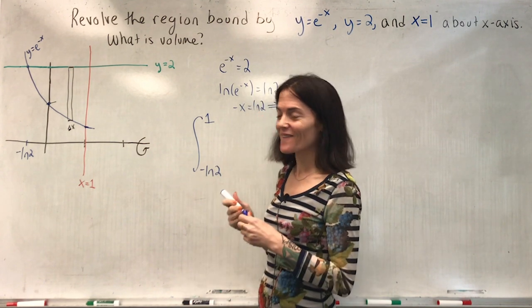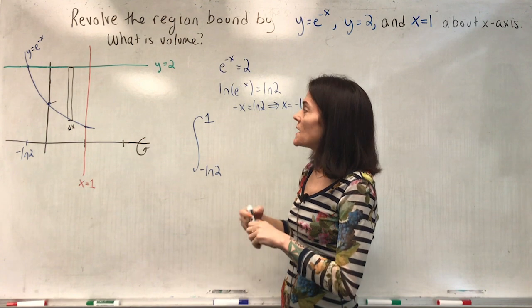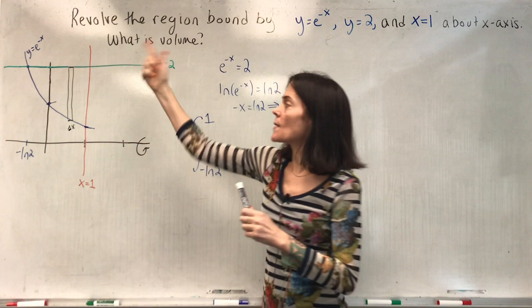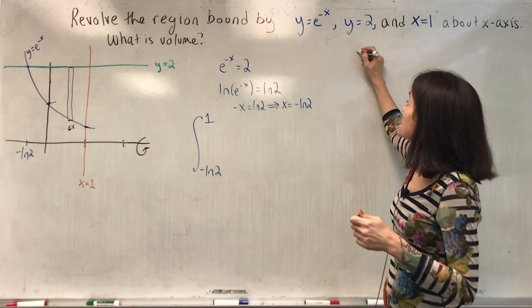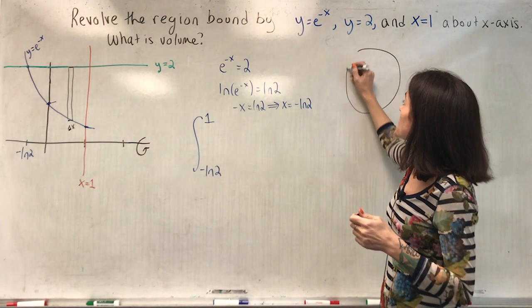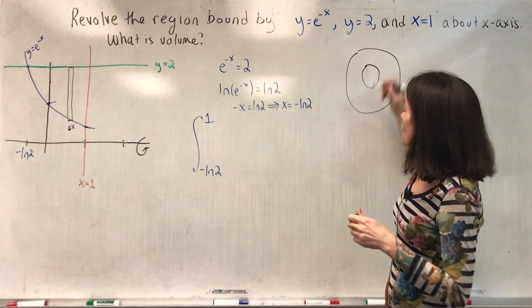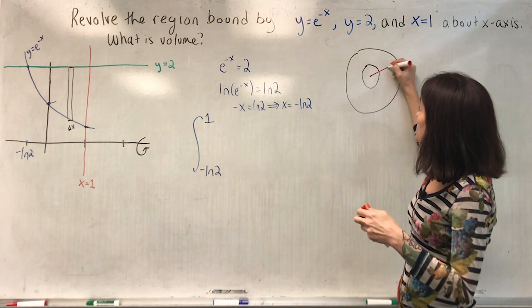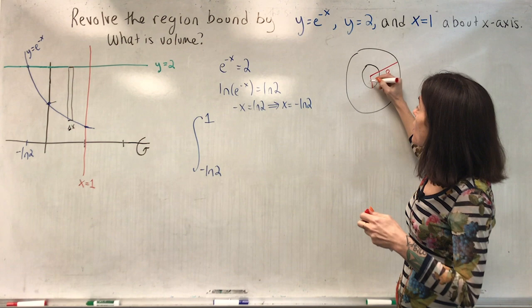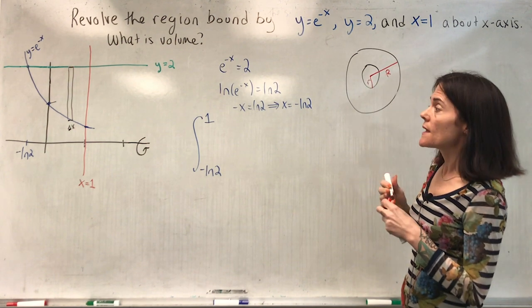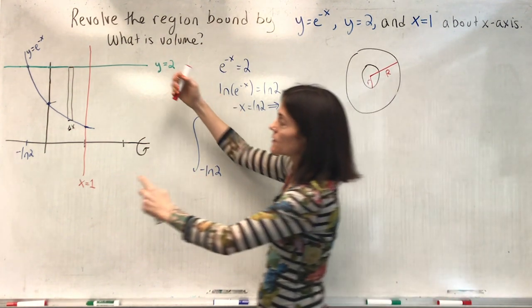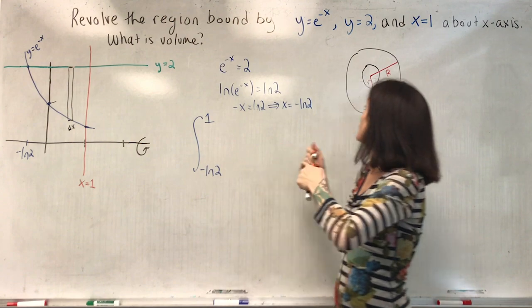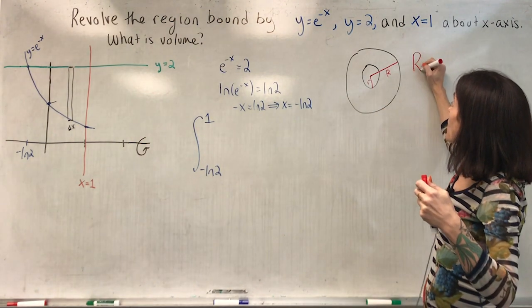Now we need to figure out what our integrand is. If this is our slice, this will come around and be a washer. So this washer looks something like this, where we have capital R, where capital R goes from the center to here, and little r goes here. And in this case, you have to look. Capital R is this length. Capital R is 2.